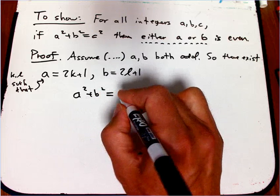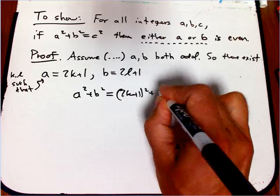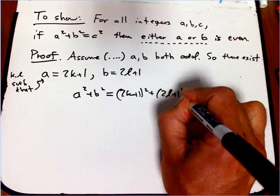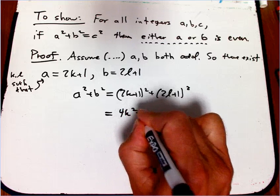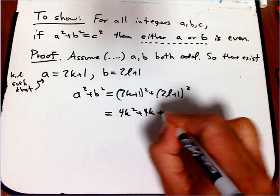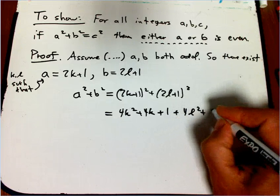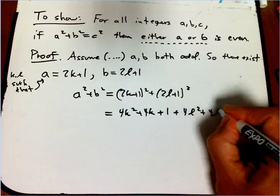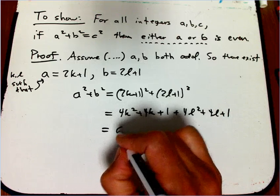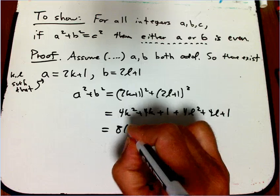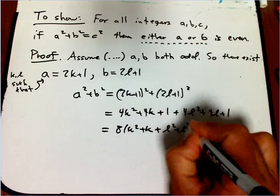So now we can actually stick that in. a squared plus b squared equals 2k plus 1 squared plus 2l plus 1 squared. So that's going to be 4k squared plus 4k plus 1 plus 4l squared plus 4l plus 1. So the point here is that that's going to be 8 times a whole bunch of stuff.